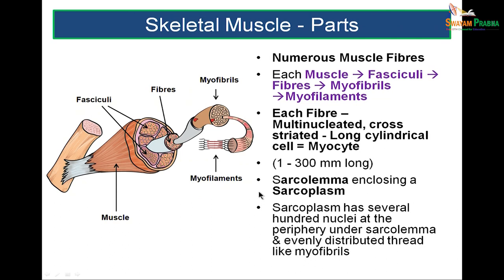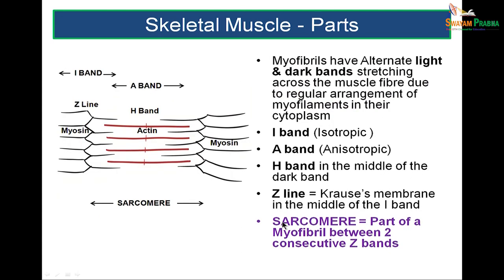In muscle, the cytoplasm is called sarcoplasm and the plasma membrane is called the sarcolemma. In skeletal muscle, the sarcoplasm has several hundred nuclei, peripherally placed under the sarcolemma. Myofibrils have alternate light and dark bands — the A band (dark band) and the I band (isotropic or light band). The H band is in the center of the A band, and the Z line is in the center of the I band. These bands are made up of regularly arranged myofilaments.